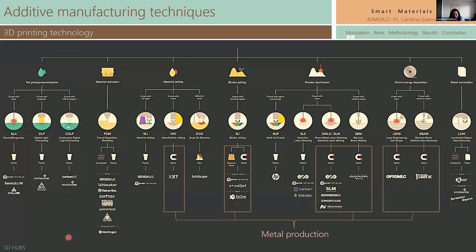There are many kinds of techniques to manufacture this kind of material. Some are for polymers, and here in boxes are those techniques that you can use to produce metal materials. Today I'm going to present my work, already done by selective laser melting, which is based on powder bed fusion.